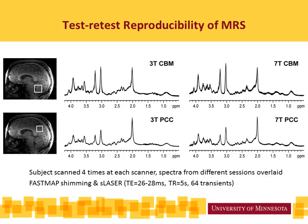When we use a pulse sequence that is optimized in these different aspects, we can get highly reproducible spectroscopic results as shown here. We are showing data from one individual for both regions of interest at the two magnetic fields. Each panel shows the four spectra overlaid that were obtained from this individual, and as you can see there is very little difference from session to session, demonstrating great reproducibility.